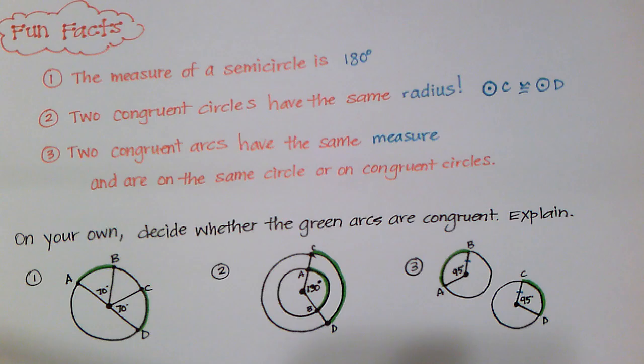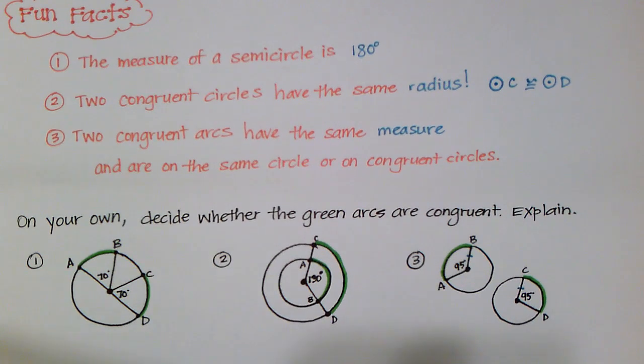So, for on your own then, based on this information, I have three problems for you. And I want you to decide whether the green arcs are congruent or not. And then I want you to explain why they are or why they're not. So, this first one, the two green arcs are AB and CD. The second one, the two arcs are AB and CD as well. And the third one, AB and CD. So, look closely at the information that you're given. Go back and look at my fun facts and some other information in this lesson. And then you'll be able to answer these questions.